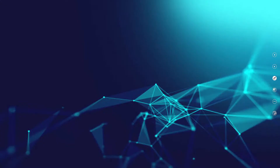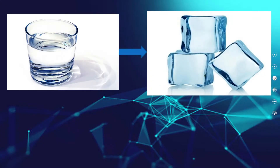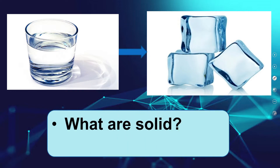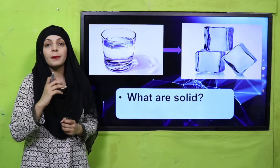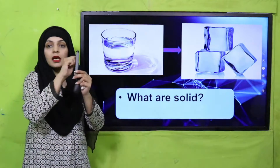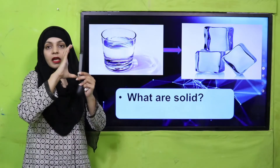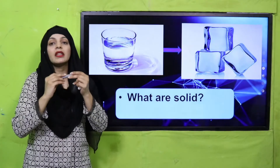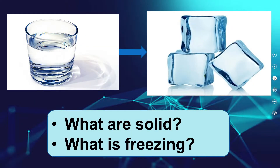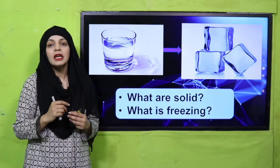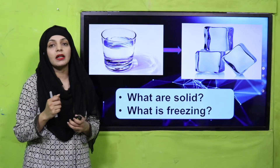My dear students, let's quickly recap what we did in the previous lecture. Tell me: what are solids? Anything that has a definite or fixed shape — kisi bhi cheez ki agar shape fix hai, ek jagah par akathi hai — that is called a solid. Then quickly tell me: what is freezing? Jab koi cheez jam jati hai, uska temperature bohot low ho jata hai, jis ki vire se woh solid ki form mein change ho jati hai — that is called freezing.